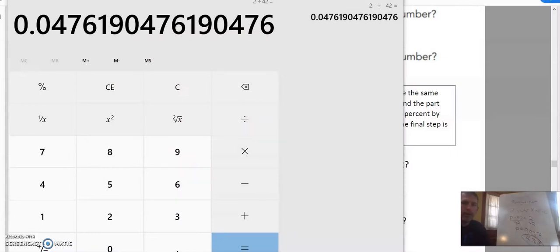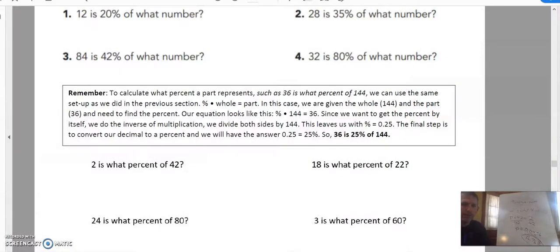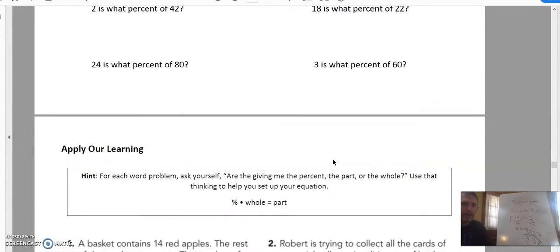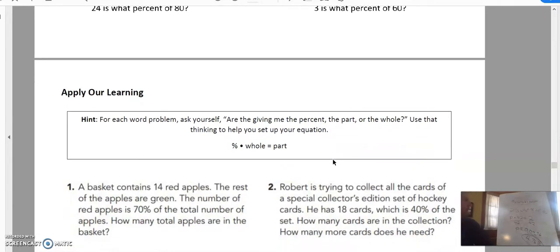Now, what if we don't know whether we're finding the part, the percent, or the whole? I've got a crazy way to remember that. The equation works. Percent times whole equals part. But there's also another way to look at this. We could look at our something over 100, which is our percent.